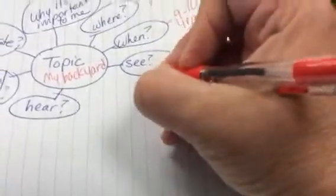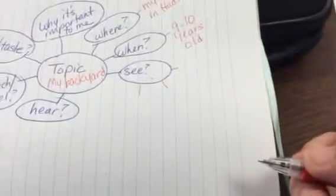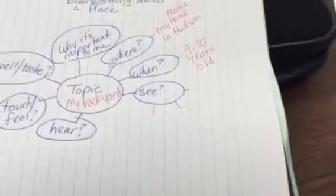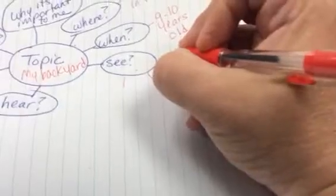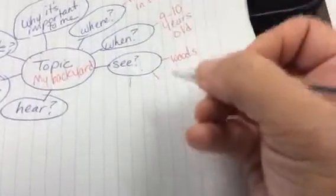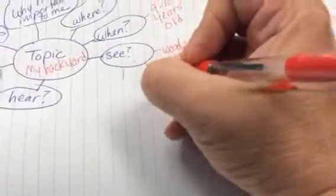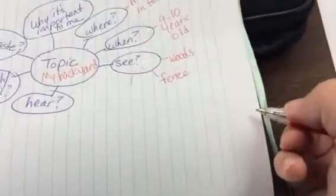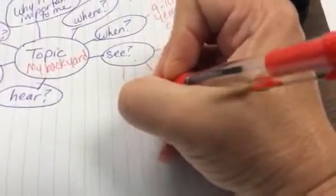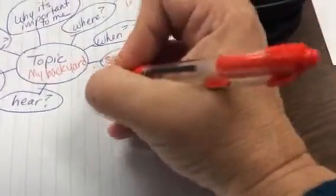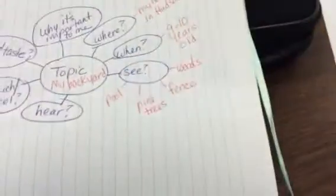And then what I would see. Now this is what I do first when I think about things that I see there. I think about what are the objects that I see. So I would see the woods behind our house, the fence in the backyard, the pine trees and the pool.